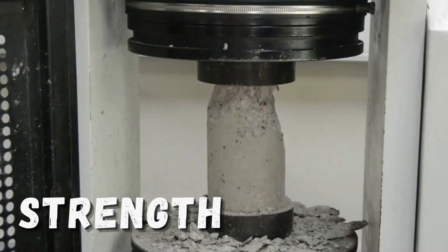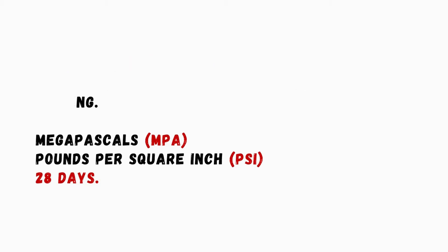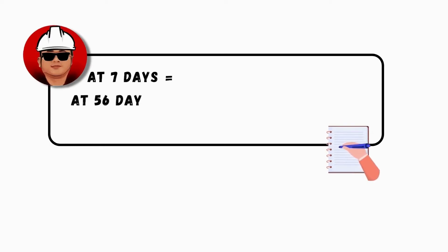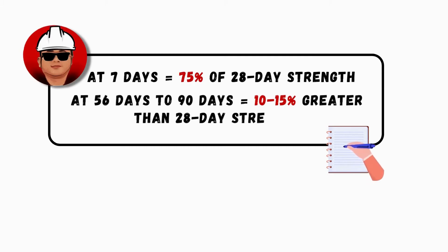Strength — Compressive strength may be defined as the measured maximum resistance of a concrete specimen to axial loading. It is generally expressed in megapascals (MPa) or pounds per square inch (PSI) at an age of 28 days. Seven-day strengths are often estimated to be about 75% of the 28-day strength, while 56-day and 90-day strengths are about 10% to 15% greater than 28-day strengths.